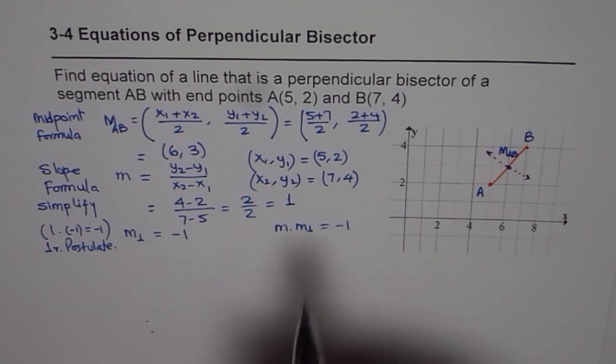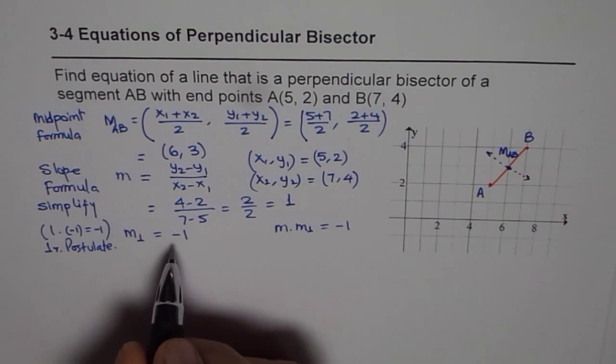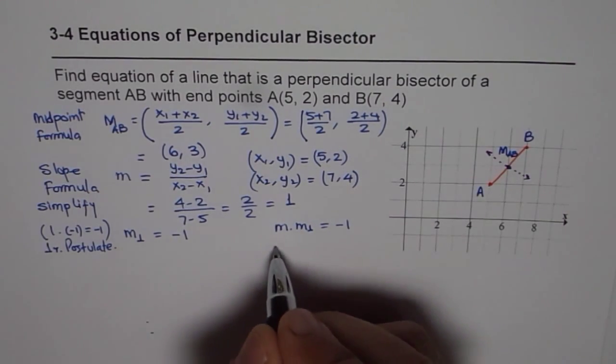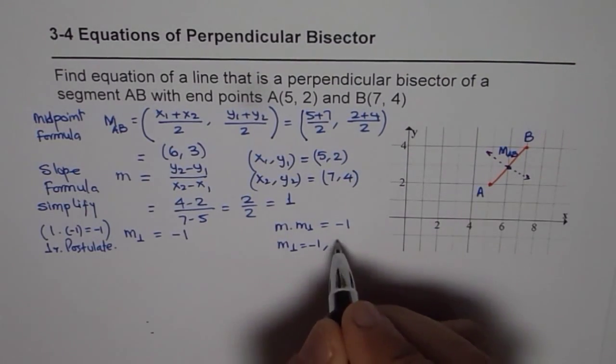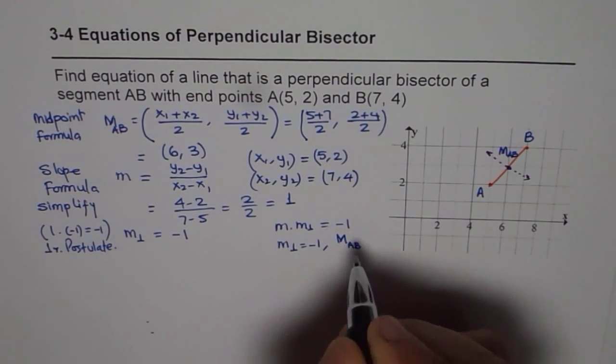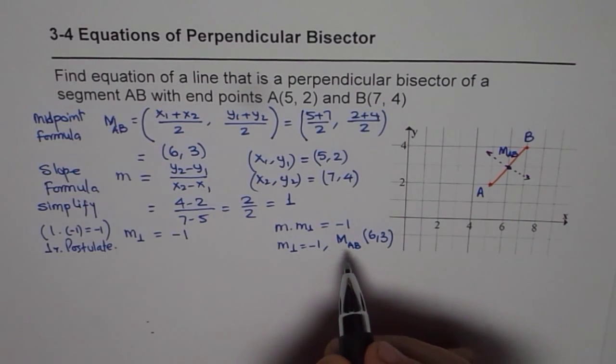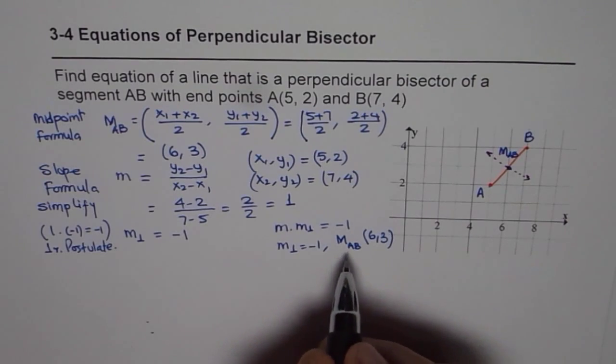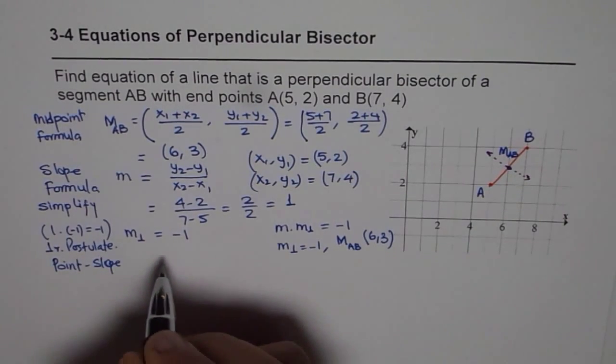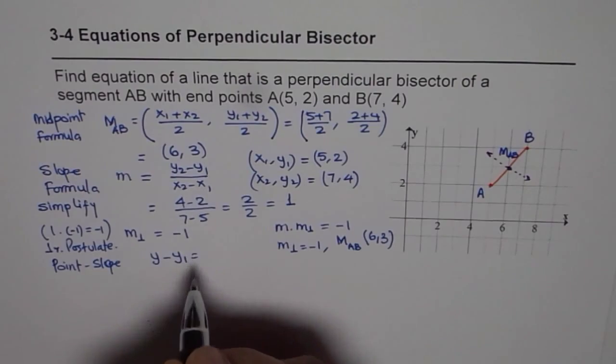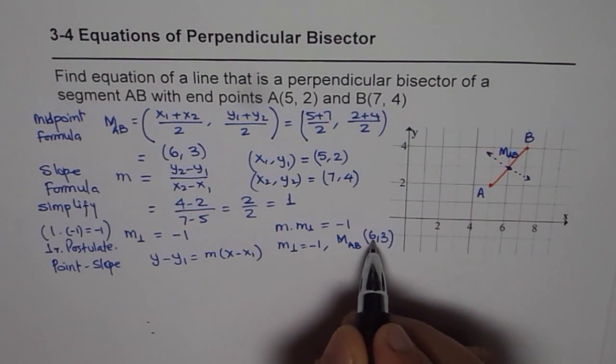Now we need to find the equation of the perpendicular bisector - a line with slope -1 that passes through the midpoint M_AB. The slope is -1 and it goes through the point (6,3). We can use point-slope form to get the equation. The point-slope form is y - y1 = m(x - x1). The y-value is 3 and x-value is 6.